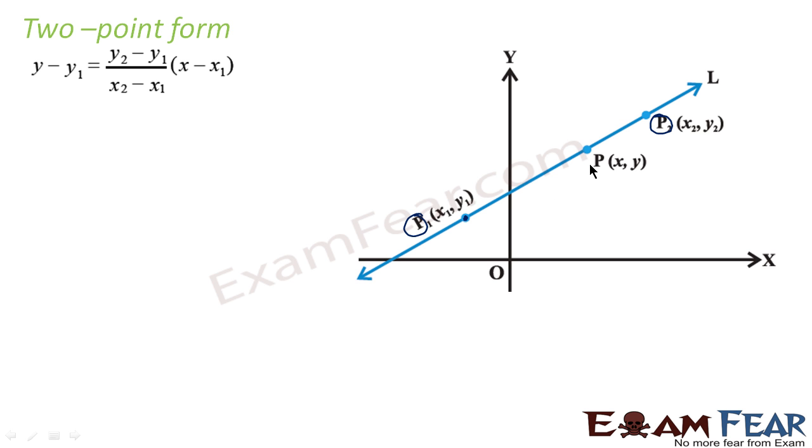Very simple. We know that m is nothing but slope. So if you see, we can say that m is the slope, which is y2 minus y1 divided by x2 minus x1. This is the slope.